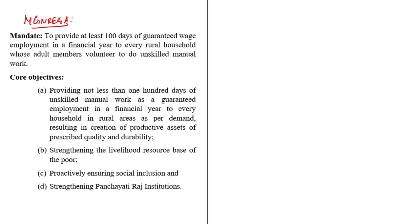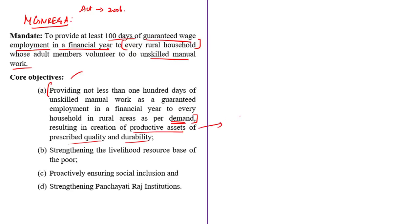The MGNREGA program provides at least 100 days of guaranteed wage employment to every rural household whose adult members volunteer to do unskilled manual work. The core objectives include providing not less than 100 days of unskilled manual work as guaranteed employment in a financial year to every rural household and creation of productive assets of prescribed quality and durability. This is a demand-driven wage employment program — the transfer of financial resources from the center to the state is based on the demand for employment in every state.